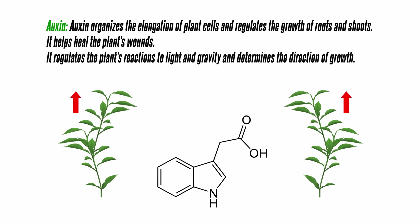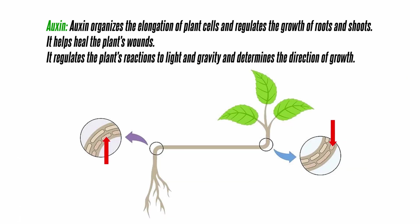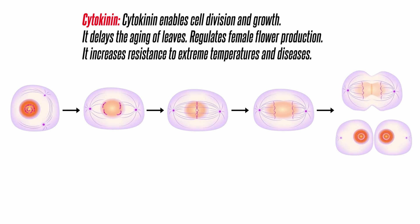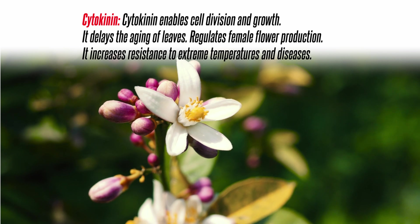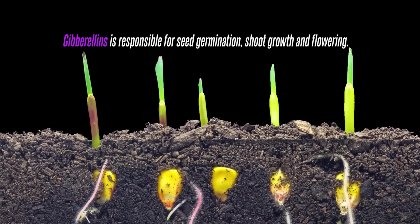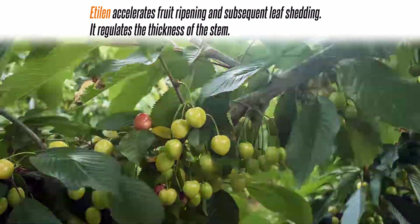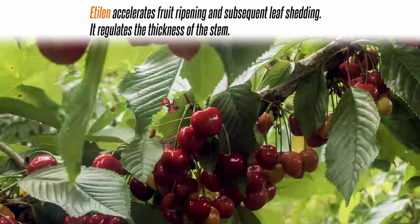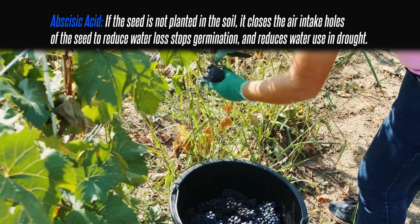Auxin organizes the elongation of plant cells, regulates the growth of roots and shoots, helps heal the plant's wounds, regulates reactions to light and gravity, and determines the direction of growth. Cytokinin enables cell division and growth, delays the aging of leaves, regulates female flower production, and increases resistance to extreme temperatures and diseases. Gibberellin is responsible for seed germination, shoot growth, and flowering. Ethylene accelerates fruit ripening and subsequent leaf shedding, and regulates stem thickness. Abscisic acid closes air intake holes if the seed is not planted in soil, stops germination, and reduces water use in drought.